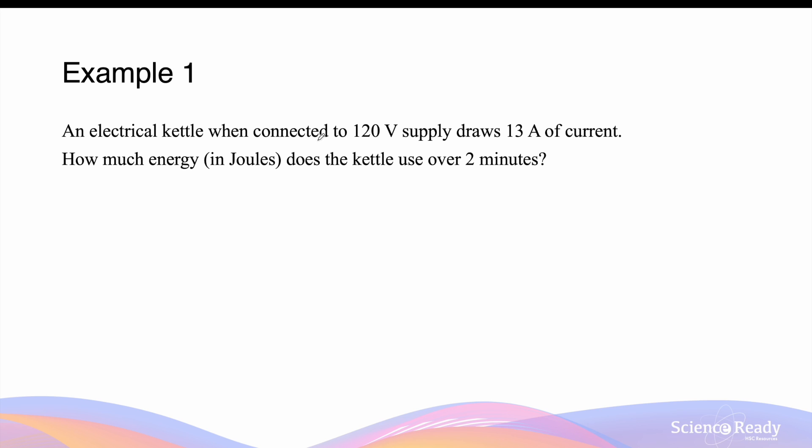An electrical kettle, when connected to a 120 volt supply, draws 13 amps of current. How much energy in joules does the kettle use over two minutes? We know electrical power is given by the voltage times the current. The voltage is 120 volts and the current associated with this voltage is 13 amps. This gives an answer of 1560 watts of power or the other equivalent SI unit will be joules per second.